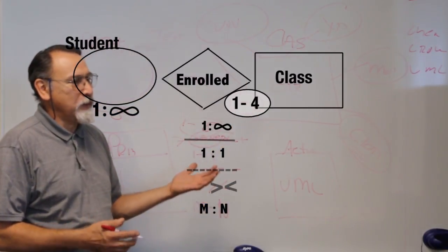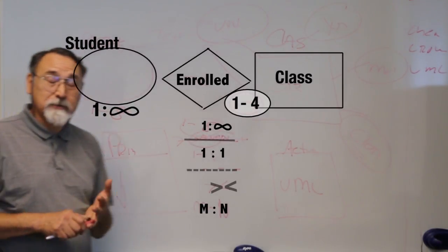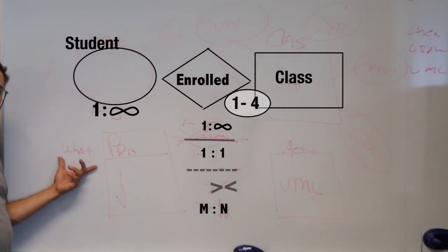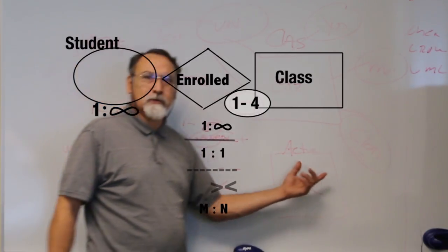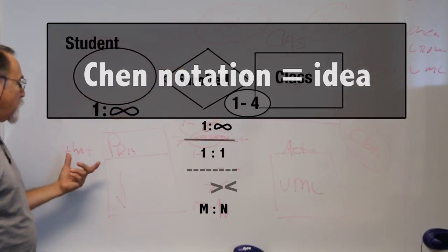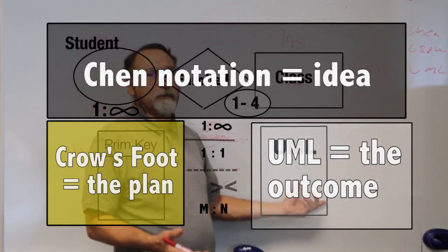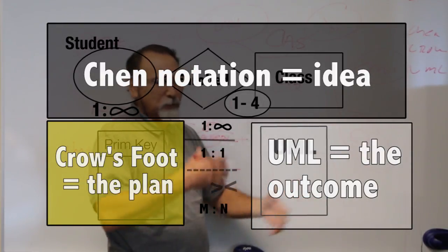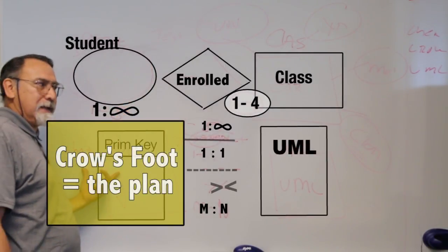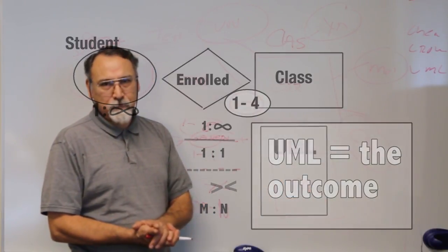We're talking about the ER diagram — the conceptualization of the idea. You're talking about what it's going to look like and what it actually looks like. So you go from the idea, to the plan, to the actual event — and that concludes Chapter 4.